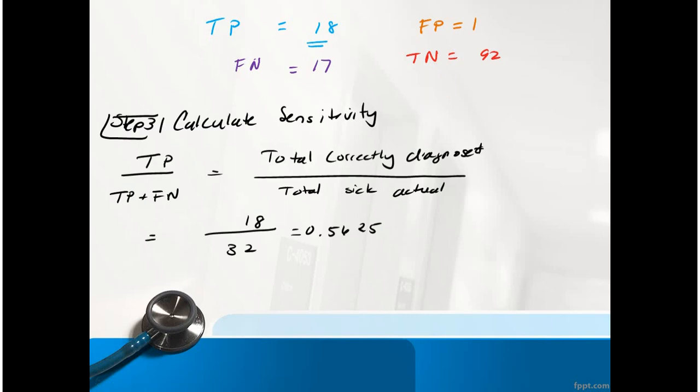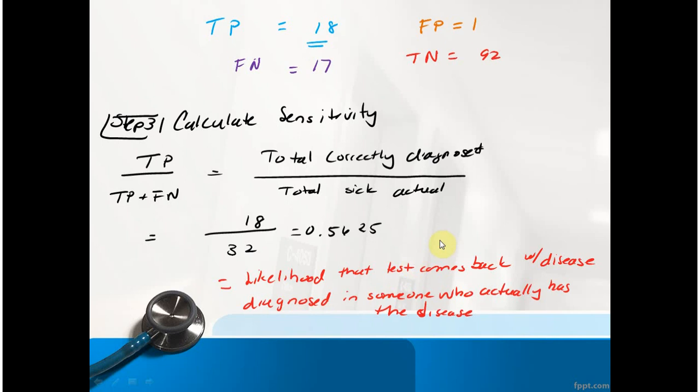How do you calculate sensitivity? You take the true positives, which is 18, and divide it by the total number that were actually sick, which is 32. So what's your rate of correctly diagnosing people who were sick? Well, you had a 56% chance of getting that right. That's the likelihood the test comes back saying they had the disease when they really did have the disease.